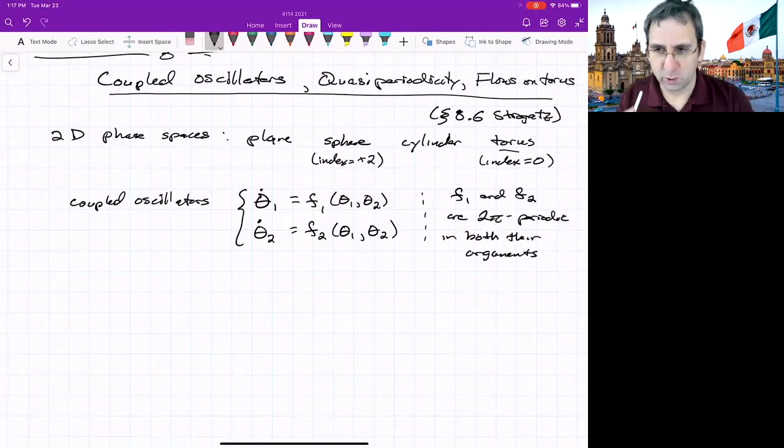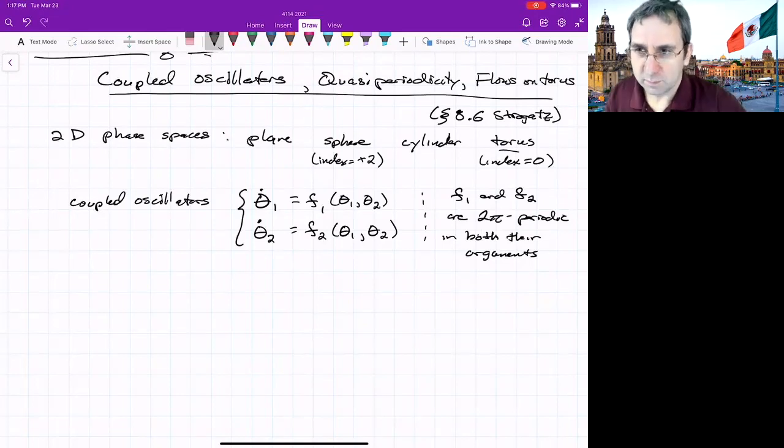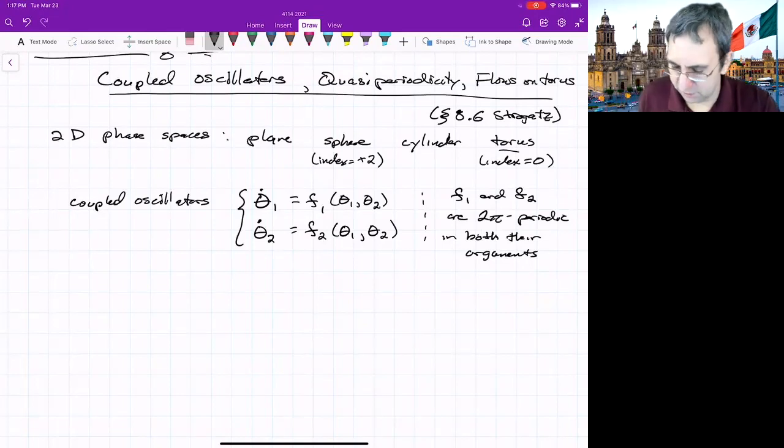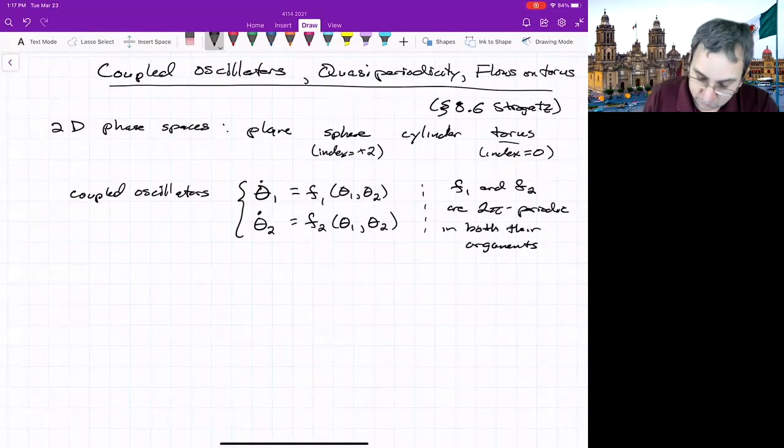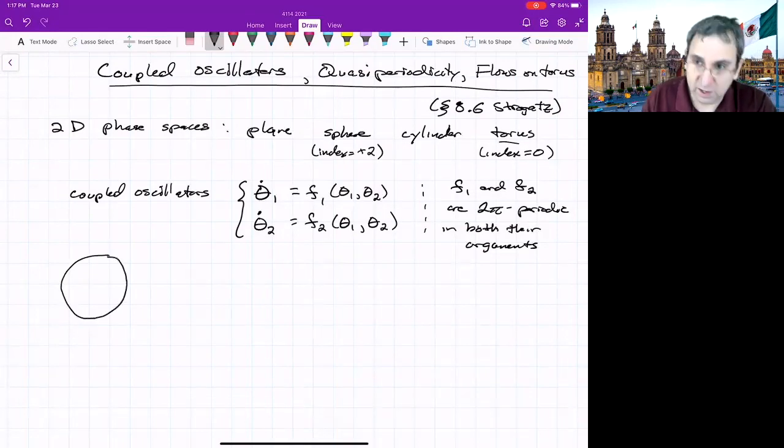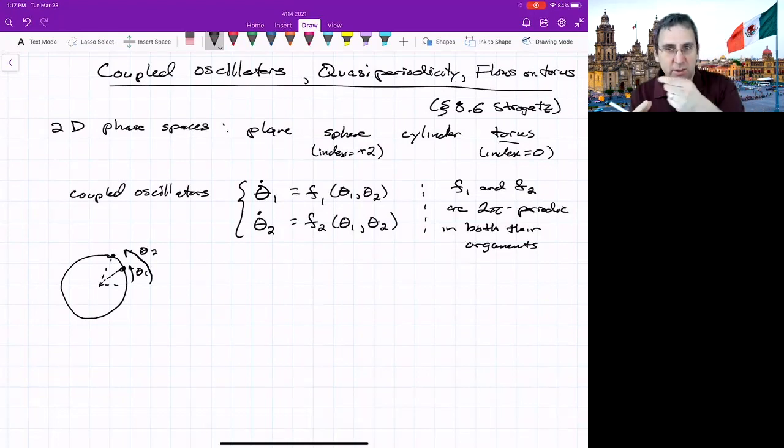When we talked about flows on a circle, we required that it be two pi periodic in its single argument. So how can we think about this? One way might be to just view a single circle and we've got two different angles. We'll have like an angle theta one and then another angle theta two. And you can think about how those are moving around.